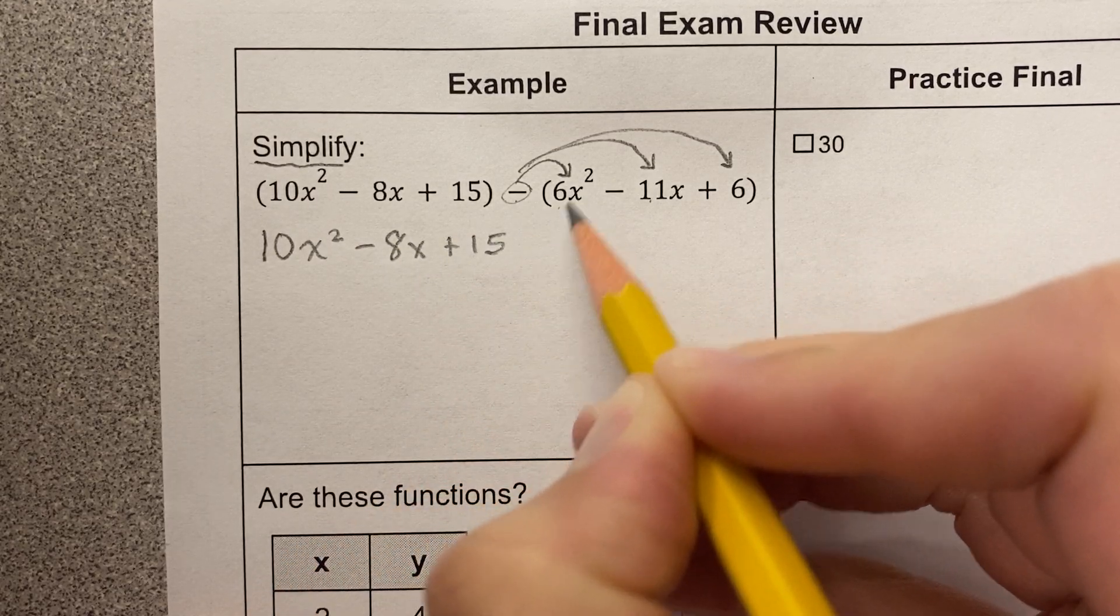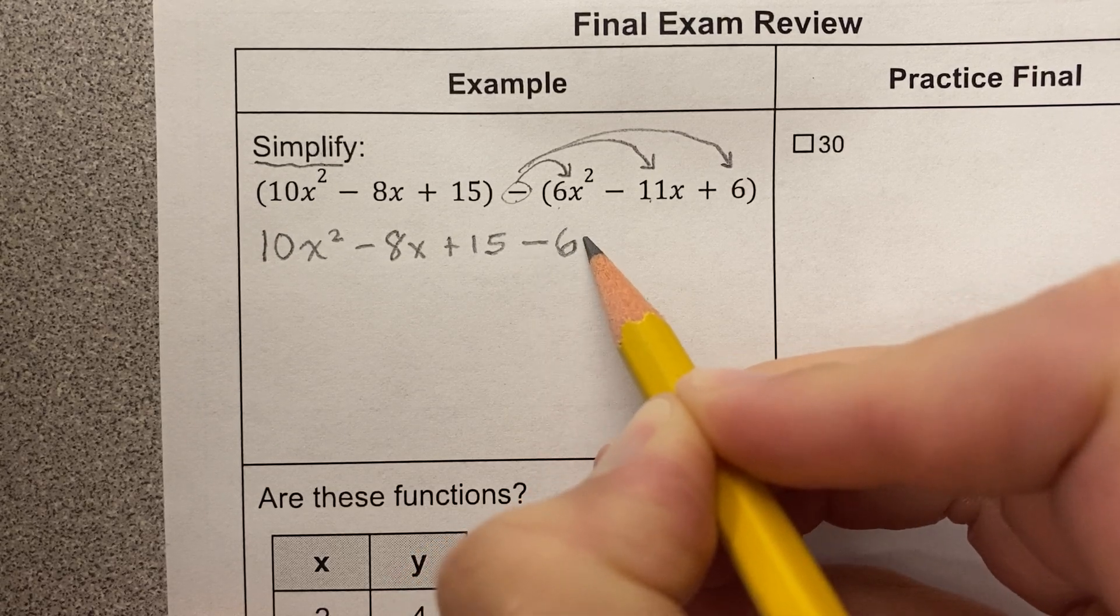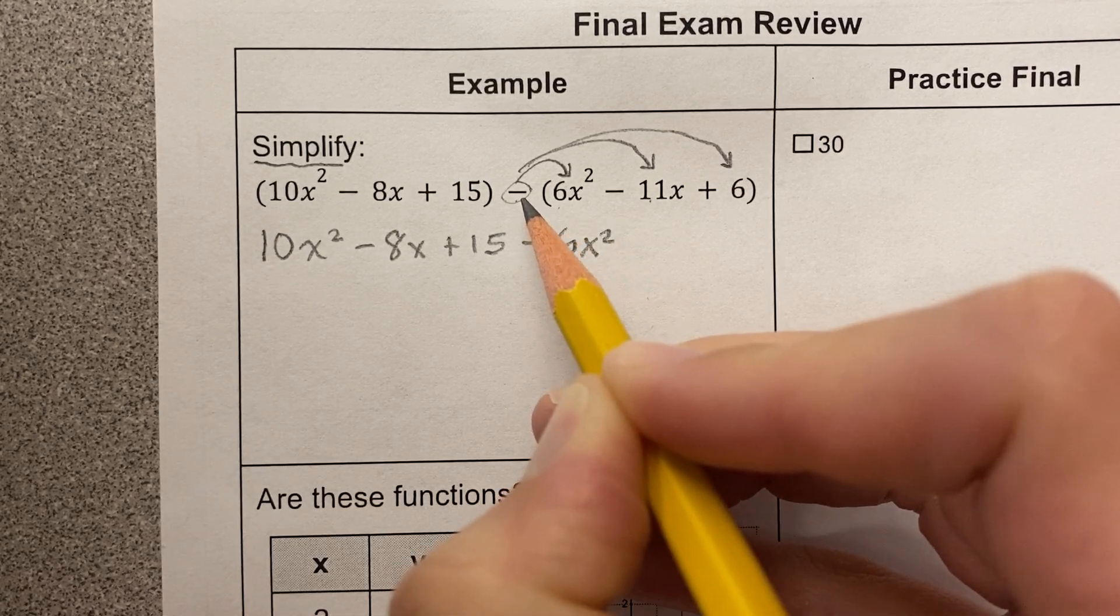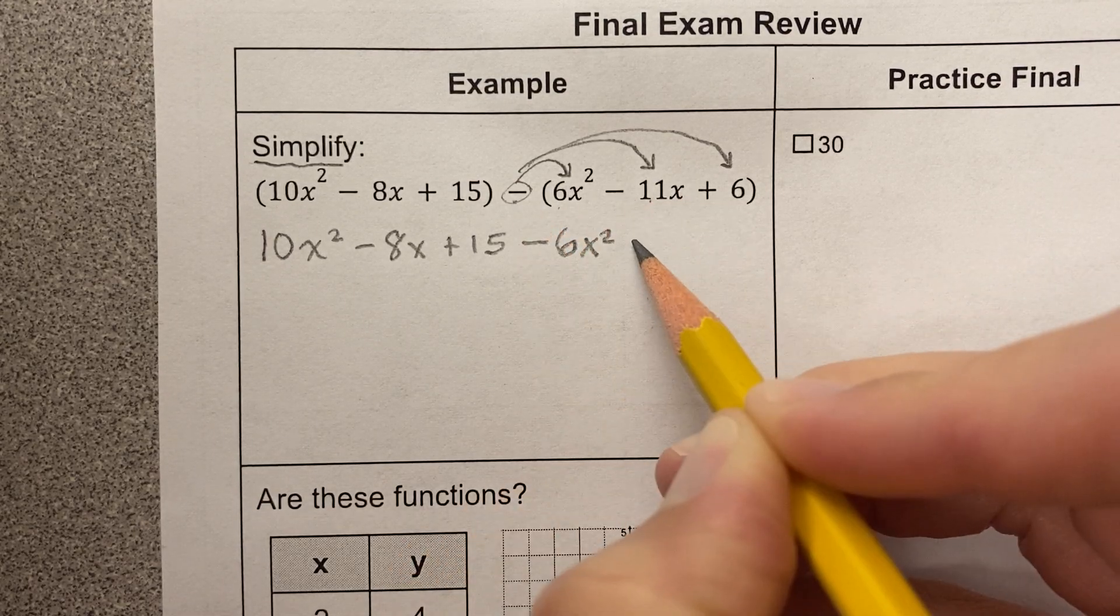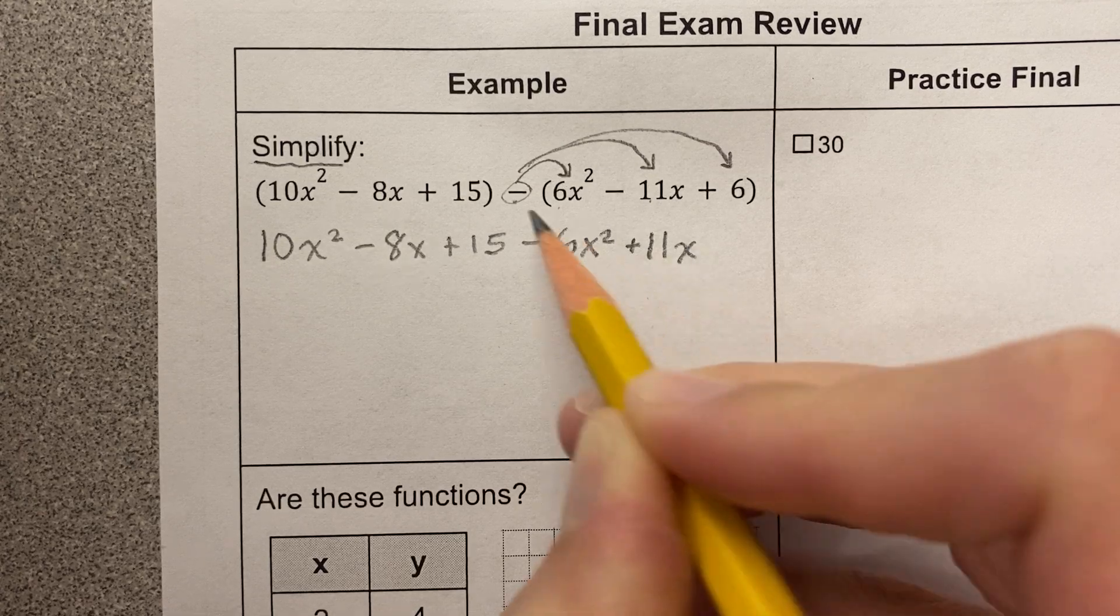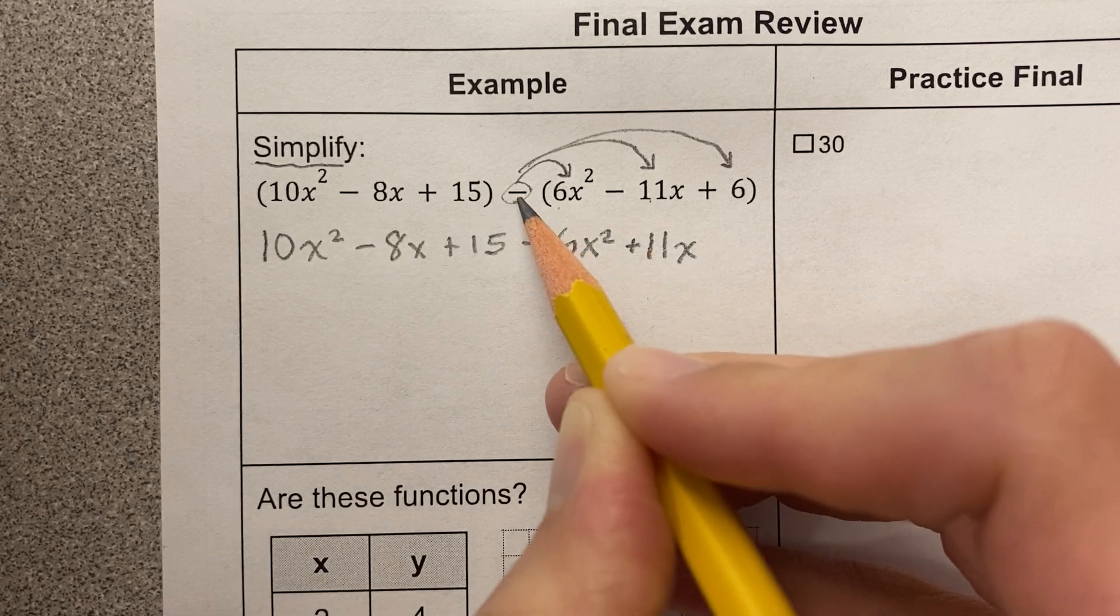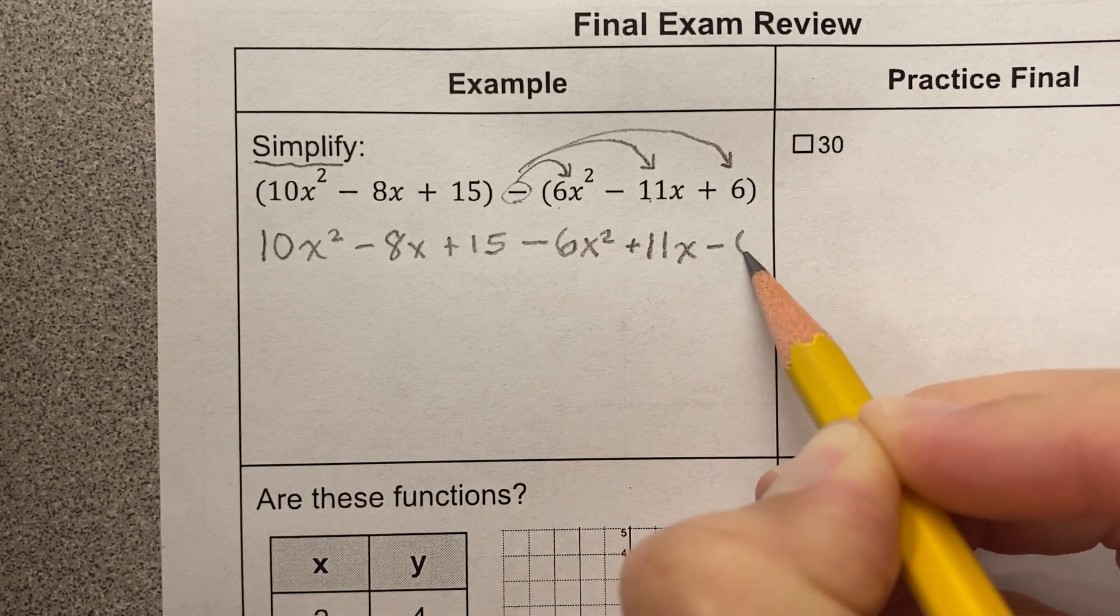Now I'm subtracting 6x squared, so I'm going to subtract 6x squared. I'm subtracting negative 11, this is negative and negative, that becomes positive. Subtracting negative 11 becomes positive 11, and subtracting 6 becomes negative 6.